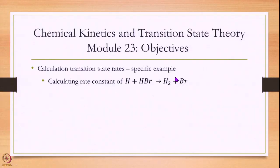Hello and welcome to module 23 of Chemical Kinetics and Transition State Theory. Now we have a final formula for transition state rate. Today we will look at a specific example of how numbers are exactly evaluated. We will look at the example of H plus HBr going to H₂ plus Br.